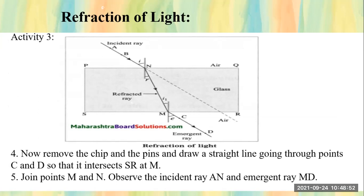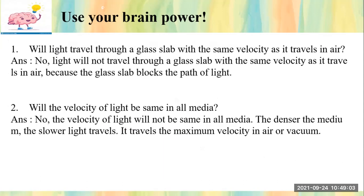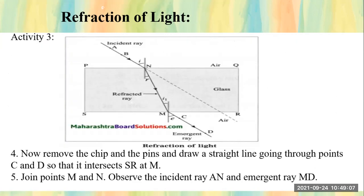Now students, let's do a revision of Activity 3. We took one white paper and placed a glass slab on it. A glass slab is a rectangular shaped thick glass. We drew rectangle PQRS with the help of the glass slab. Then we drew a normal line, put two pins A and B, and drew a straight line passing through those two pins.